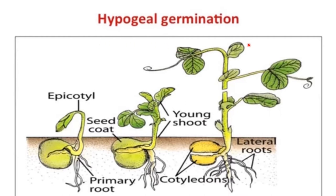There are two types of germination: hypogeal germination and epigeal germination. In hypogeal germination, the cotyledon remains inside the ground level after germination of the seed. Hypo means inside the ground level, and this type of hypogeal germination is seen in monocot plants.